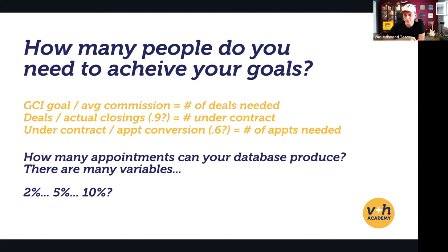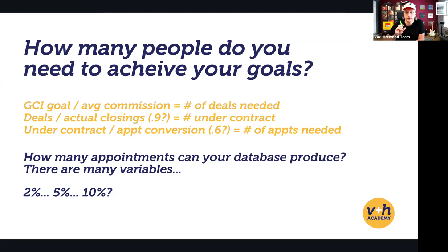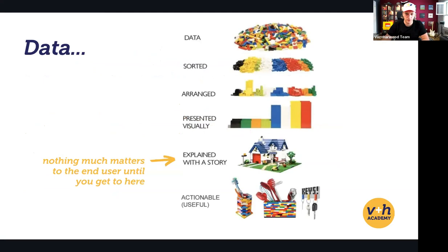There are so many variables that can influence this. If you want to be conservative, it could be 2% to 5% conversion from your database, if you have a very well-functioning system with good quality leads. There's a big difference between random people and, say, open house leads. Rather than getting into all the granular math, just keep an eye on this as you develop your systems and track what your own numbers are — they'll be different for different people, styles, and locations.